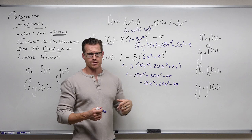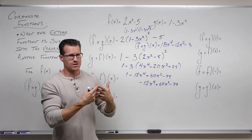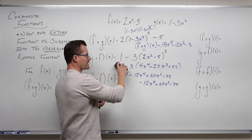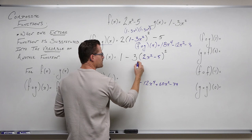We need to distribute the 3, which means some sign changes: negative 12x to the 4th plus 60x squared minus 75. Combining like terms and writing in order, we get negative 12x to the 4th plus 60x squared minus 74. We could factor further if needed, but this is the simplified version of the composition g of f of x. Notice this is not the same as f of g of x — they're completely different, because these two functions are not inverses.